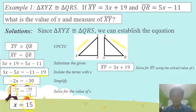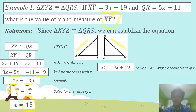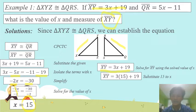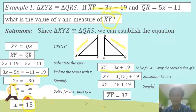We also need to solve for segment XY, as stated in the problem. To solve for segment XY, we use the value of X. Segment XY is equal to 3X plus 19. Substituting X equals 15: 3 times 15 plus 19. Simplifying, 3 times 15 is 45 plus 19, so segment XY is equal to 37.